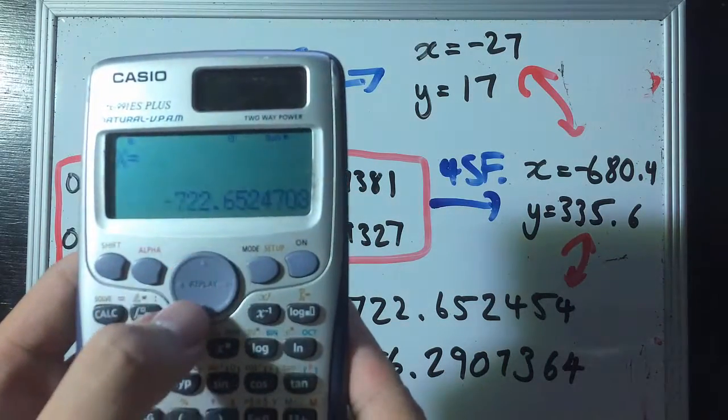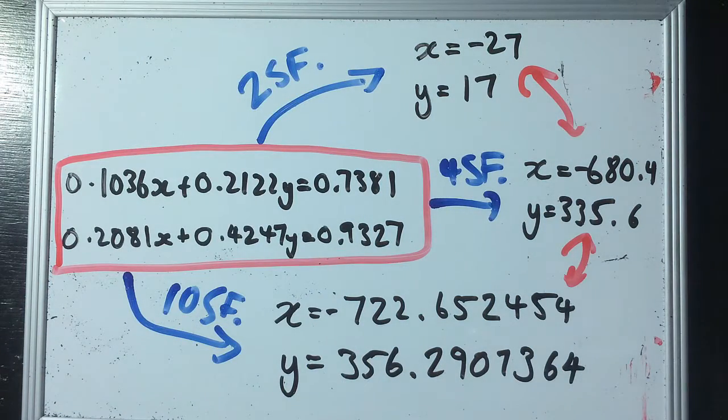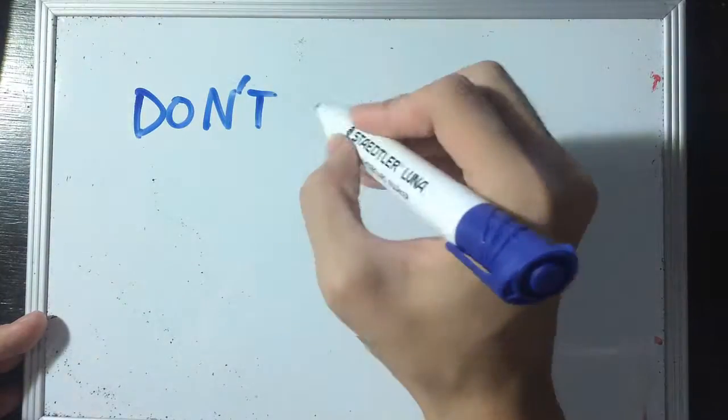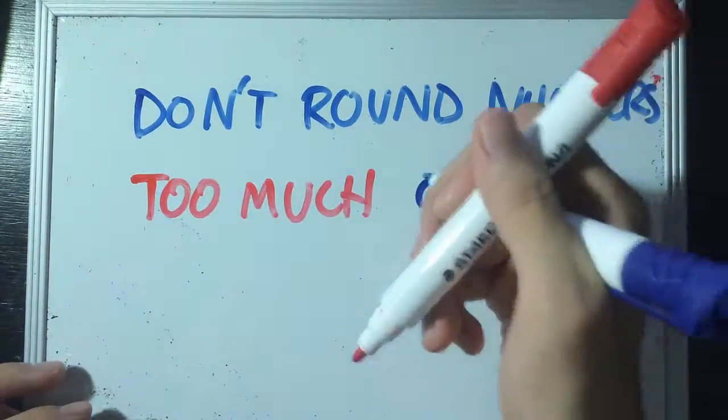Which shows that even at ten significant figures, it's not that accurate. While you might never meet cases this extreme, it's always worth remembering that when you're doing calculations, don't round numbers too much or too early.